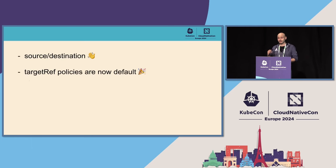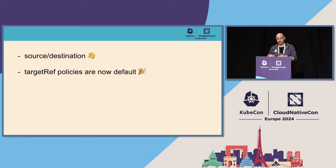The next thing I want to talk about is that source and destination policies are getting deprecated and are being replaced by target ref policies. Target ref policies are way more flexible when it comes to selecting which proxies' configurations are going to be changed and what happens to the incoming and outgoing traffic.